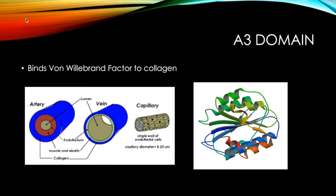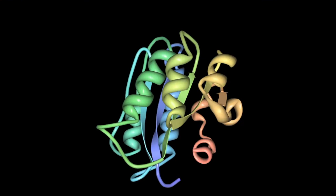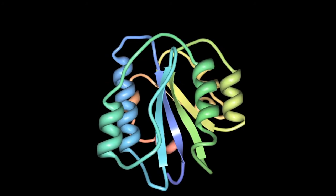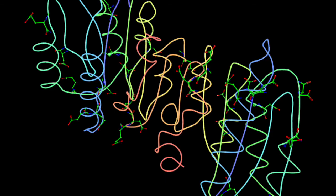Now we move on to the A3 domain. The important function of this domain is that it plays a significant role in the binding interactions of collagen and von Willebrand factor. It consists of a central hydrophobic parallel beta sheet surrounded by seven amphipathic alpha helices.